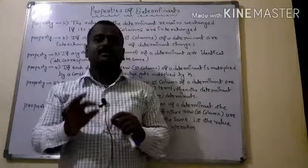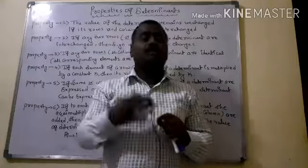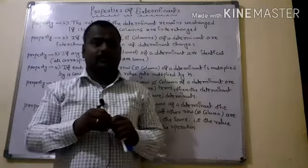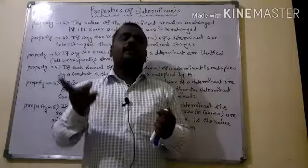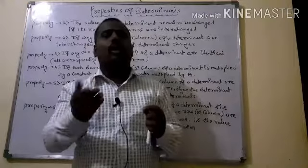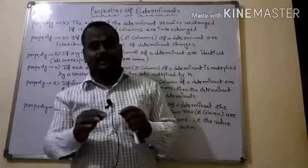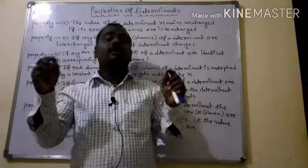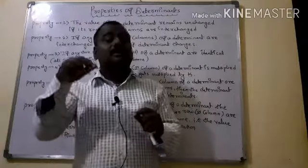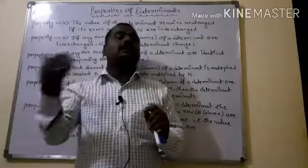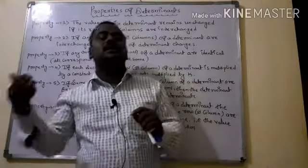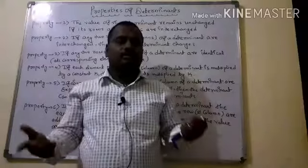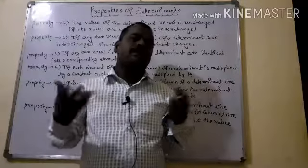The third property: if any two rows or columns of a determinant are identical — meaning all corresponding elements are the same — then the determinant is zero. The whole determinant becomes zero because of the two identical parts.